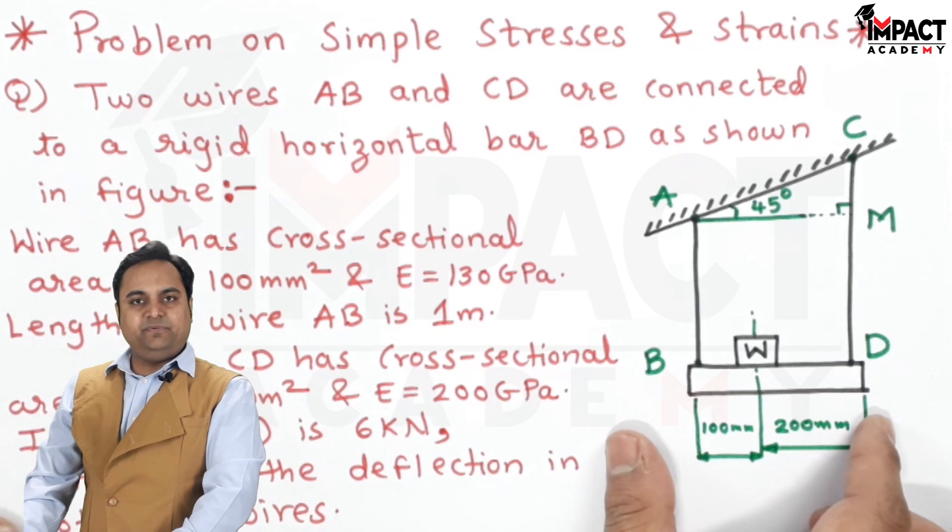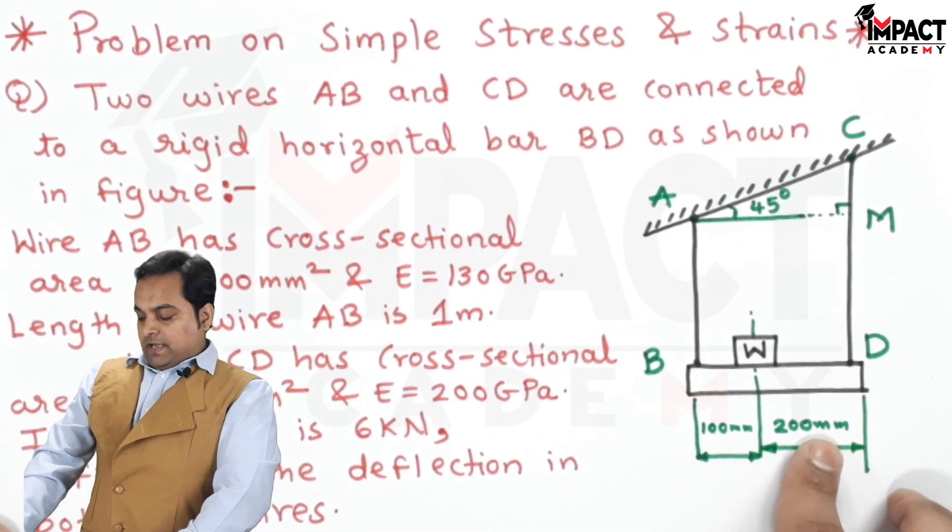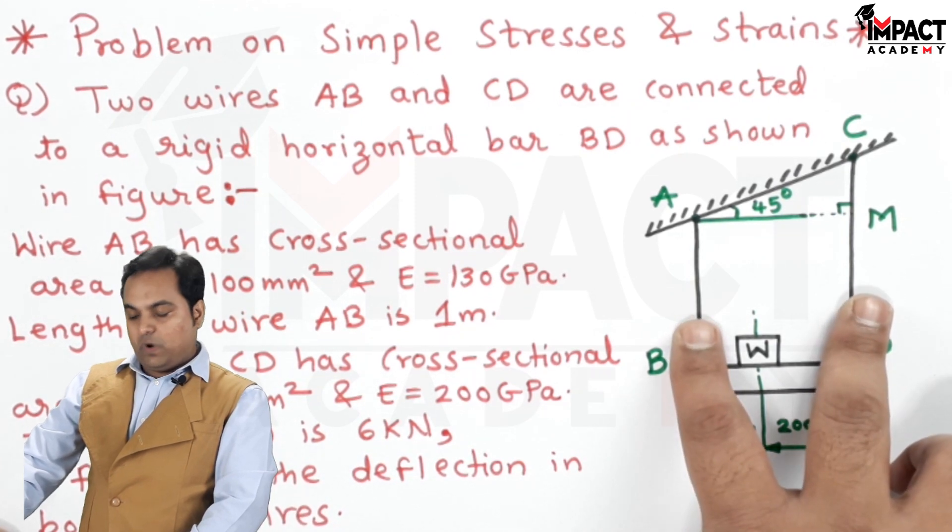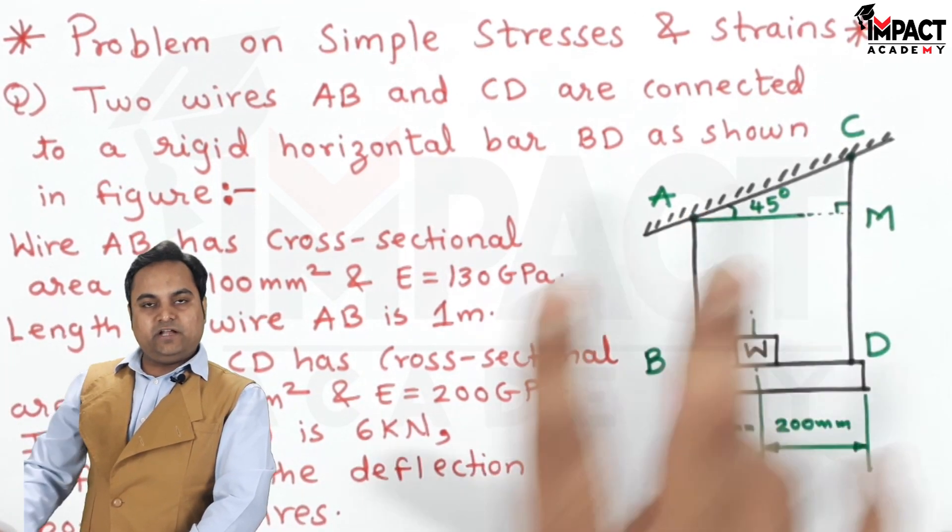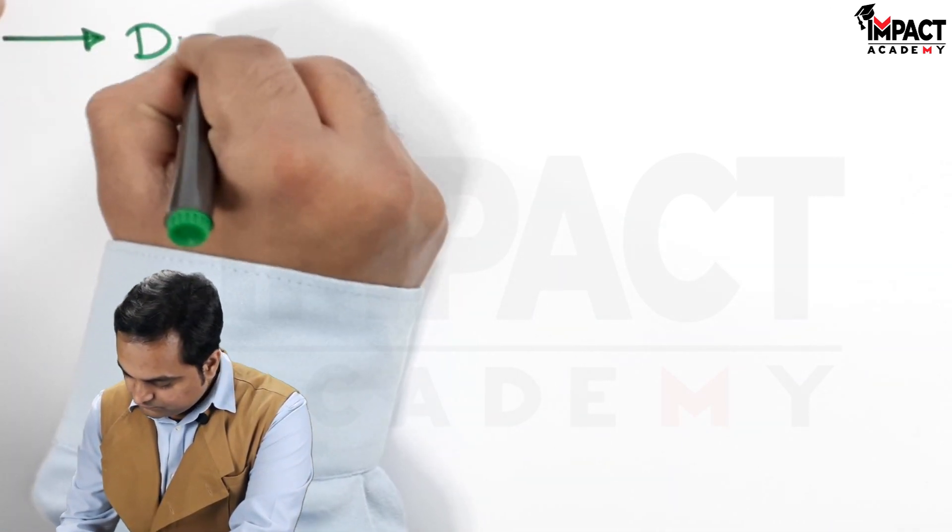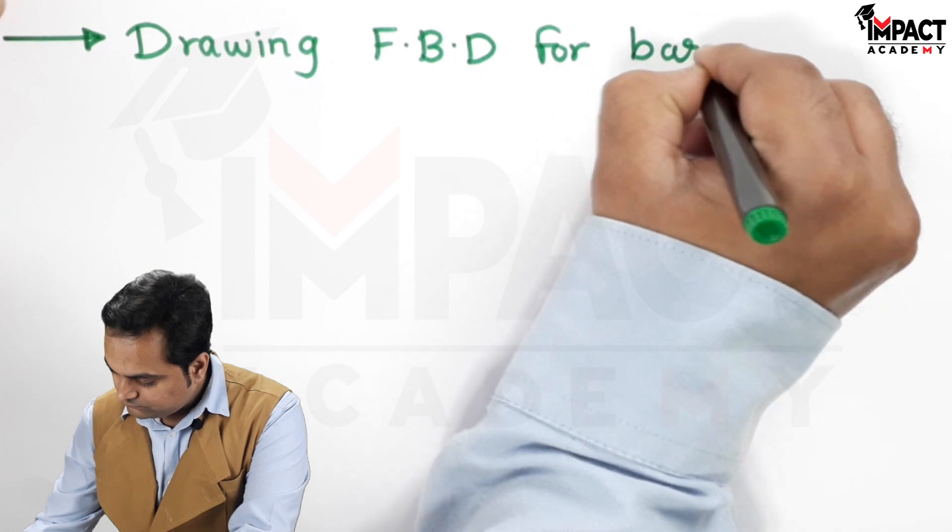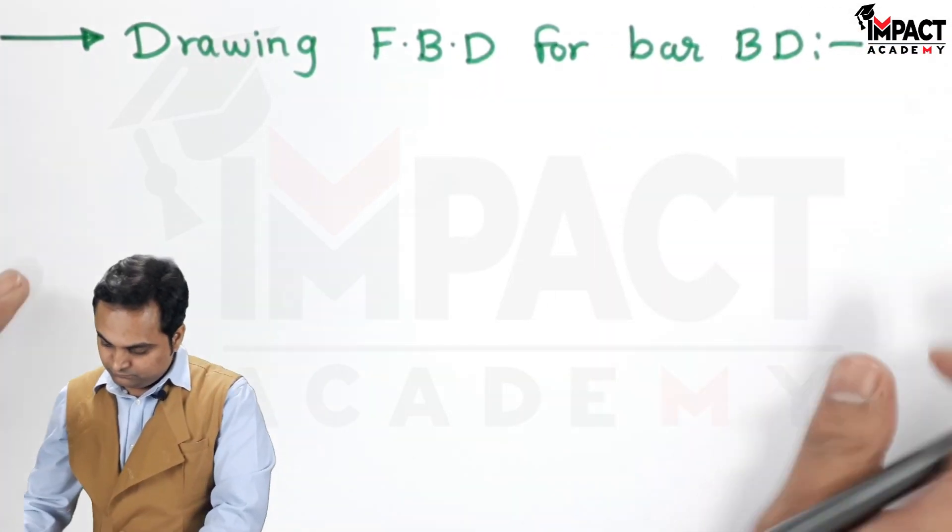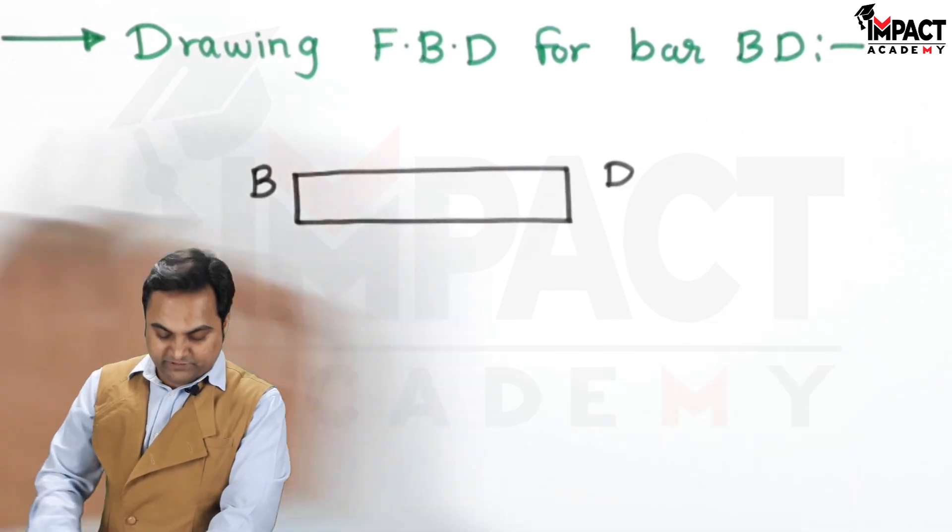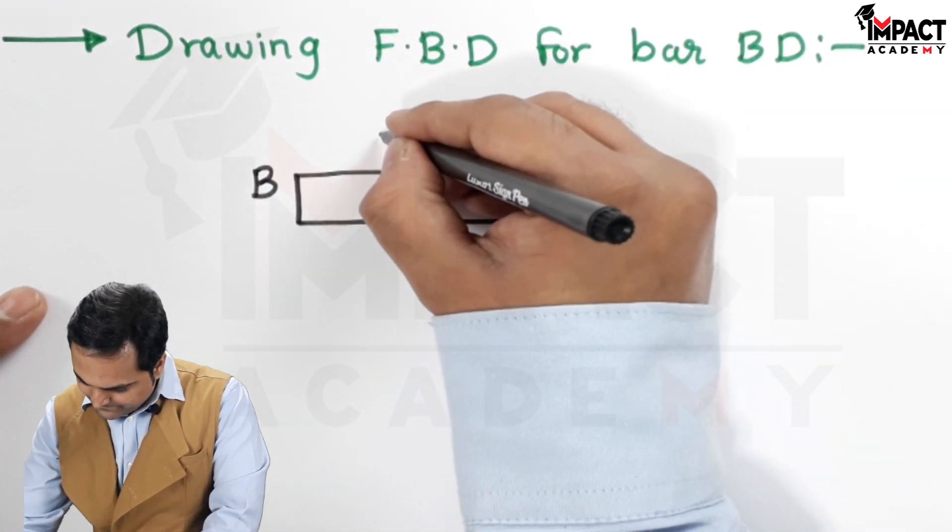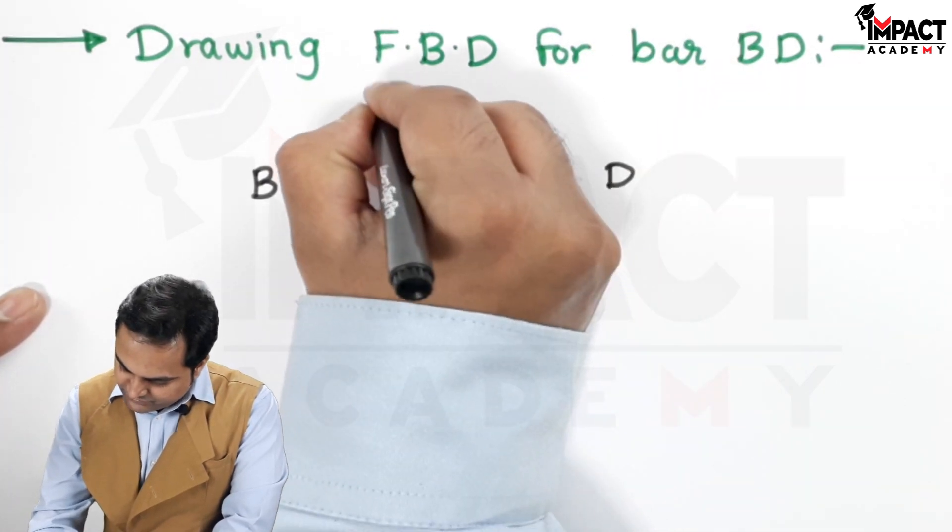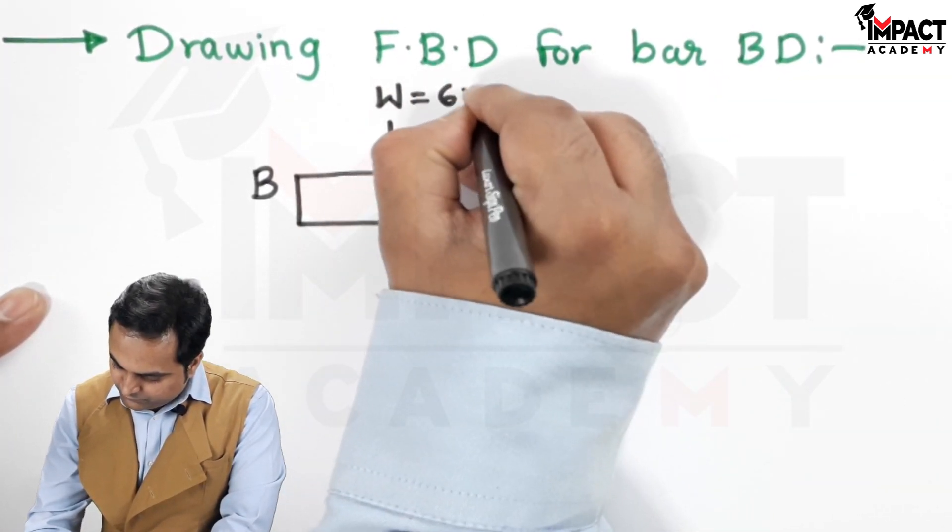Next, I will be drawing the FBD of this BD portion, that is the rigid bar. And here as we can see roughly that when the load is acting, load would be acting in the downward direction but these two wires, they are going to oppose the load. So they are offering tension in the opposite direction. So drawing the FBD, load is acting in the downward direction. The value is 6 kilonewton. So it is 6 into 10 raise to 3 newton.